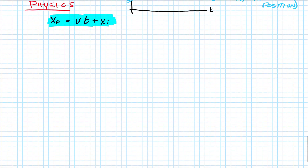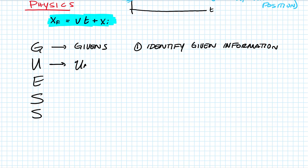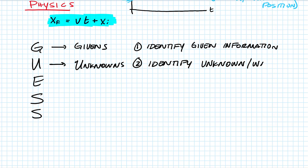When solving problems, we'll use something called the GUESS method — a way to read through word problems. The G stands for Givens: the first step is to identify all the given information in the problem. The U stands for Unknowns: identify the unknown or wanted quantity. For example, if a problem says 'solve for time,' your unknown is time.